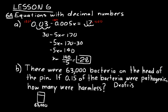0.15 of those were harmless or were pathogenic. The other 0.85 therefore, because that would add up to a total of 1. 0.15 plus 0.85 is equal to 1. One times 63,000 would be the total. 0.85 were harmless. Pathogenic means harmful basically. So we're looking for the part of that total that were harmless.